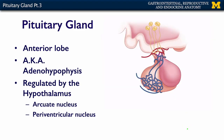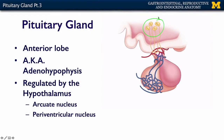The anterior lobe of the pituitary gland is also known as the adenohypophysis, and it is regulated by the hypothalamus — two nuclei within the hypothalamus called the arcuate and the periventricular. The neurosecretory cells of the arcuate and periventricular, when these neurons fire, they're going to release neurotransmitters into a large vascular complex in the pituitary stalk. This is called the hypophysial portal system.